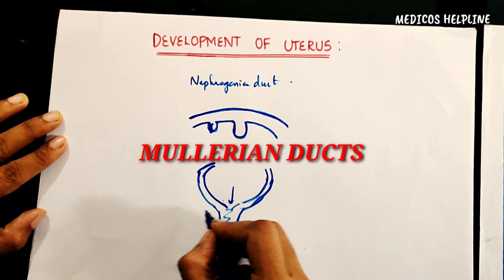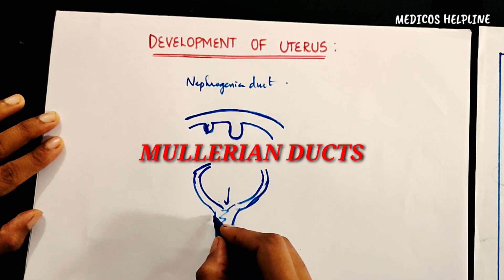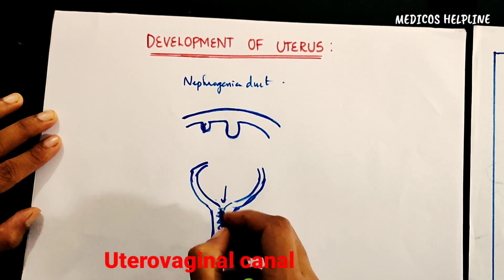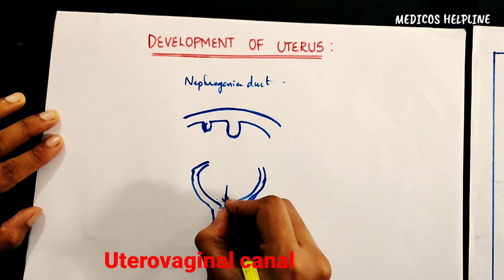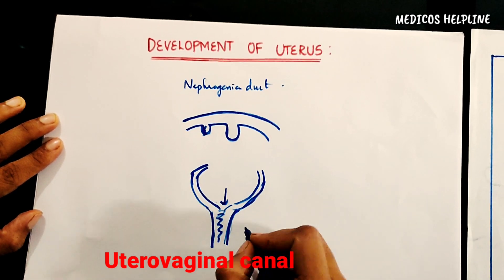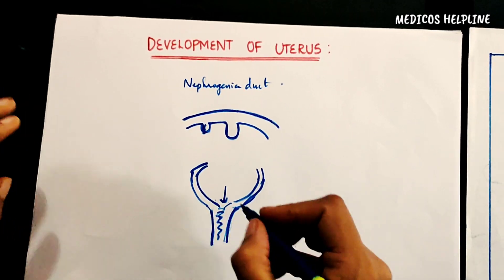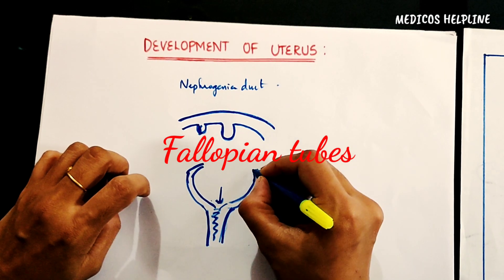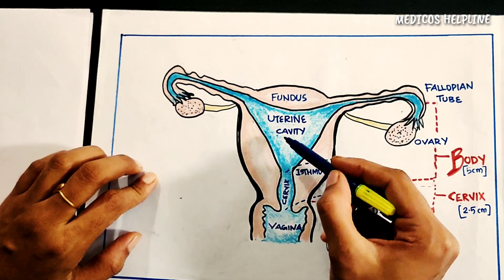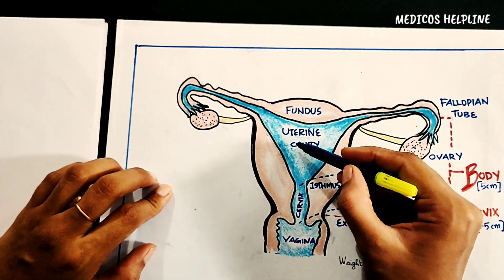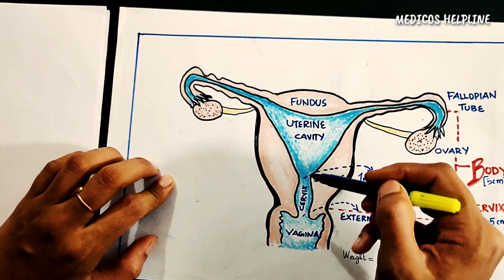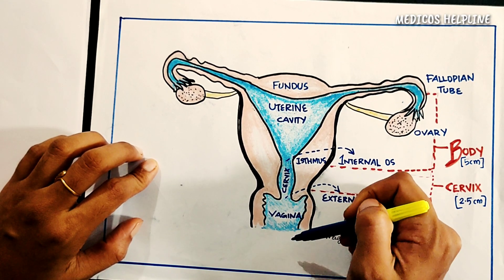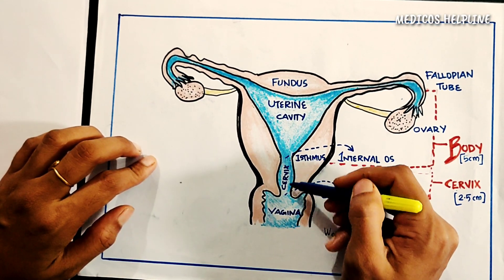The Müllerian ducts fuse together at the center to form the utero-vaginal canal. Also, the unfused parts of the paramesonephric ducts, or the Müllerian ducts, form the fallopian tubes. Hence, the Müllerian ducts fuse to form the cavity, the cervix, and the upper two-thirds of the vagina.